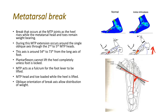During extension at the MTP joint in closed kinematic chain, the metatarsal moves on the phalanx. The metatarsal head is convex, so it moves on the concave phalanx surface. During extension, the metatarsal head rolls anteriorly while its surface slides posteriorly, because the convex surface moves opposite to its roll direction on the concave phalanx.